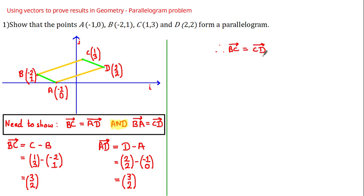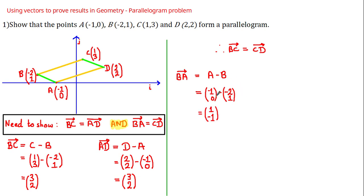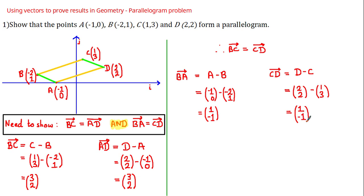Now we need to work out the vector BA. BA equals A minus B, which is (-1, 0) minus (-2, 1). That gives -1 minus (-2) = 1 and 0 minus 1 = -1, so BA = (1, -1). Then the vector CD equals D minus C, which is (2, 2) minus (1, 3), giving 2 minus 1 = 1 and 2 minus 3 = -1, so CD = (1, -1).